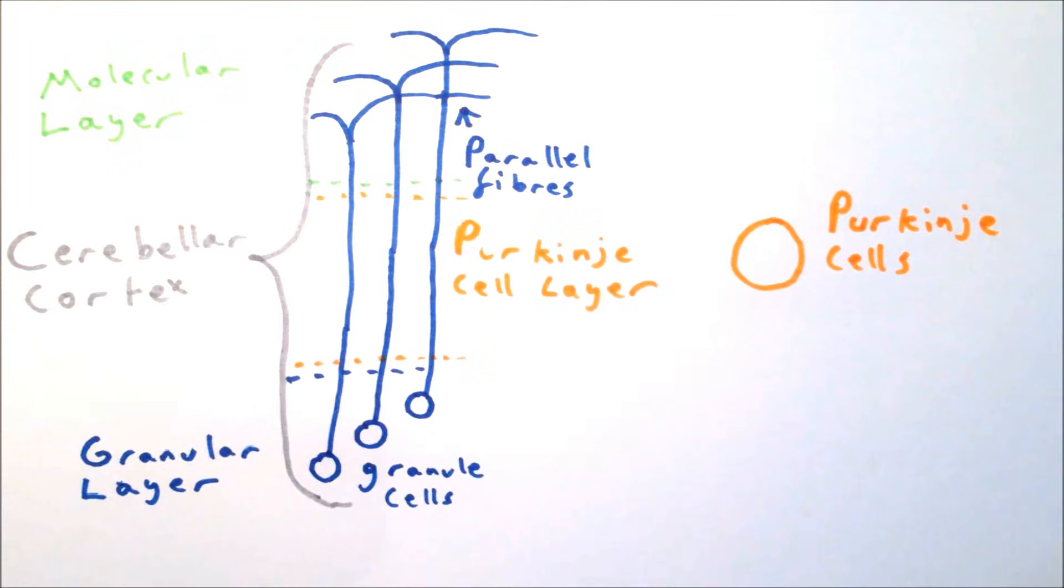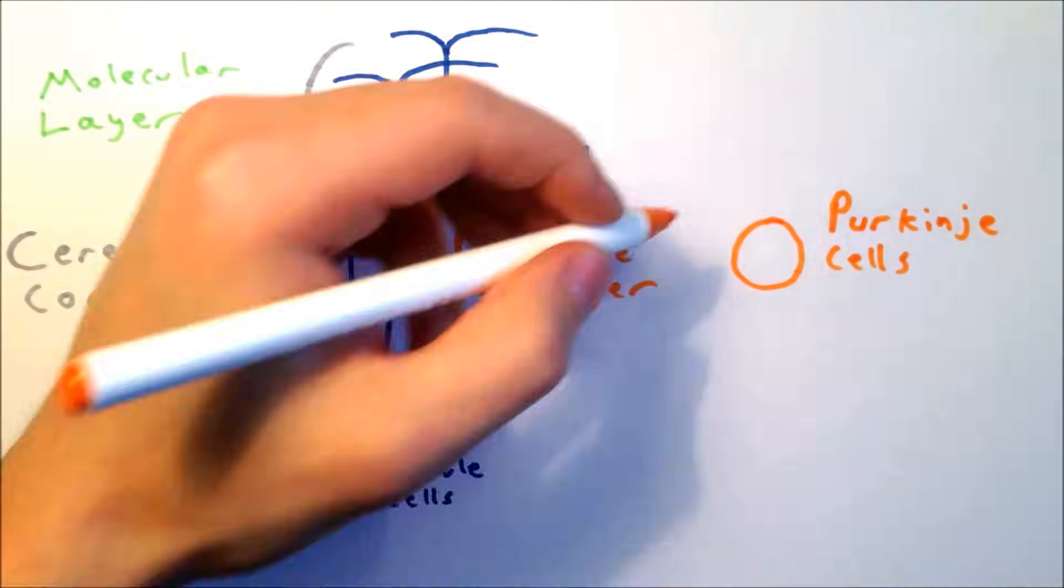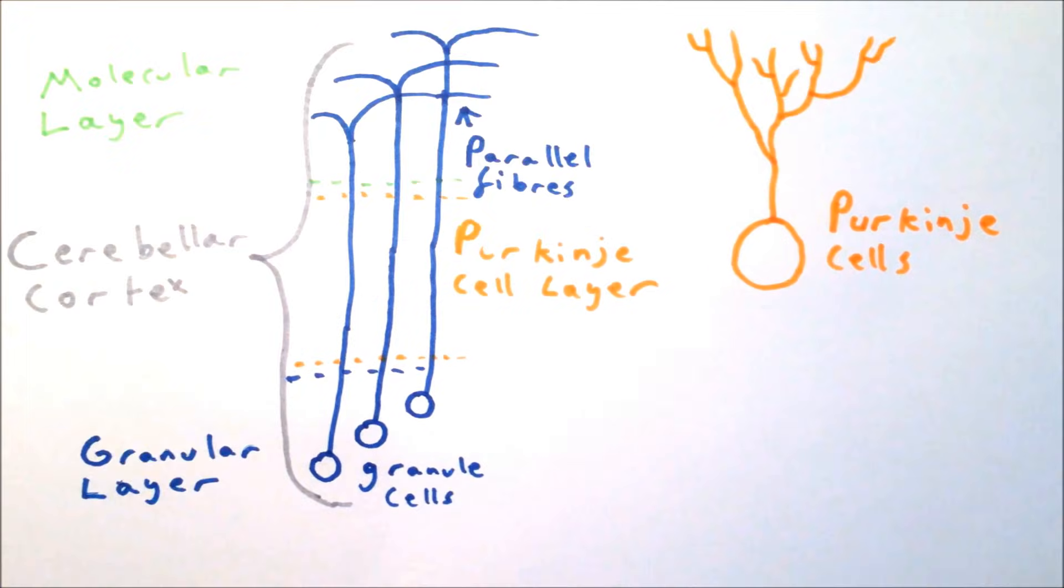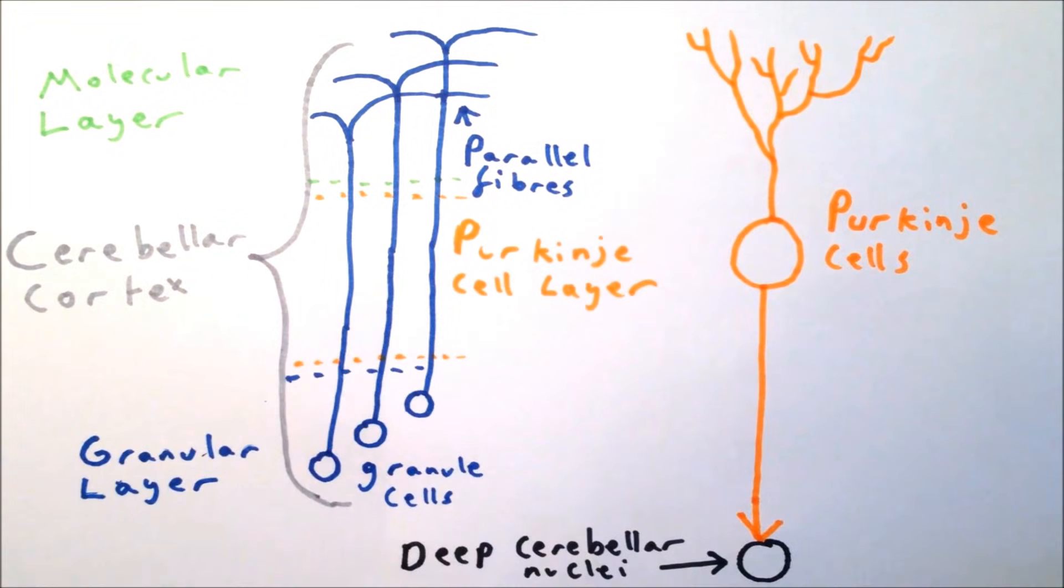The middle layer is the Purkinje cell layer, which contains neurons known as Purkinje cells. The dendrites of these neurons form massive elaborate tree-like structures in the molecular layer, and the axons also project out of the cortex to the deep cerebellar nuclei.